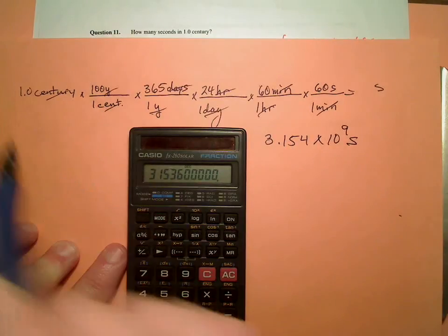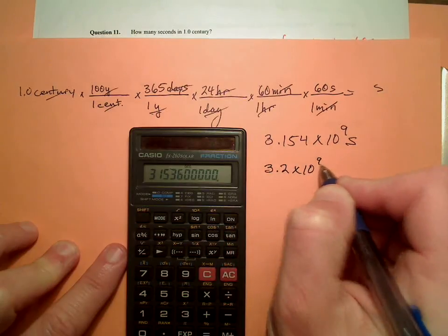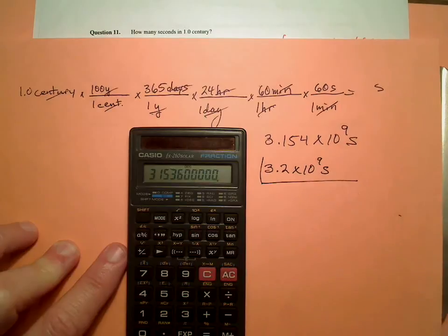But how many sig figs? I can only keep 2. So it's going to be 3.2 times 10 to the 9th seconds. Bingo.